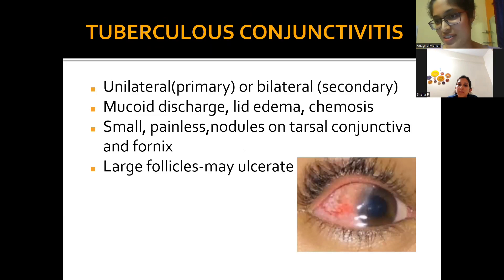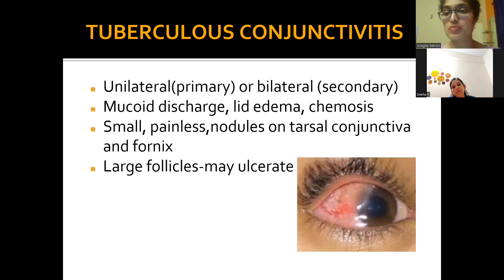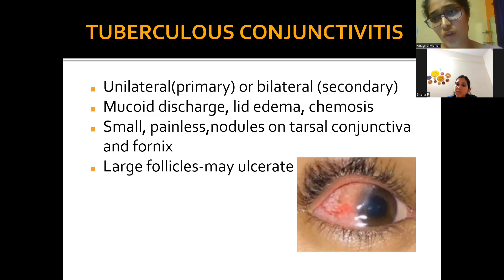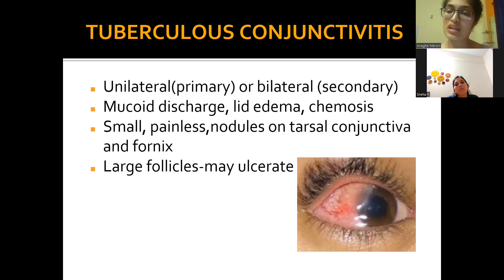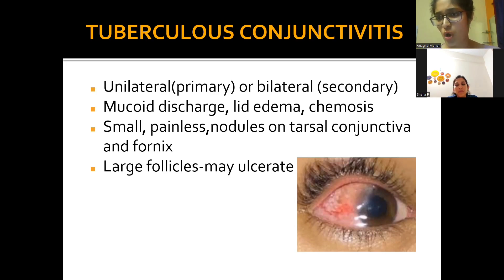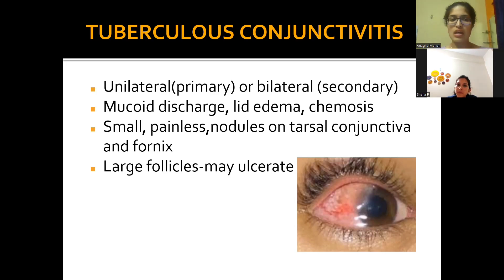Regarding tuberculous conjunctivitis: even after topical antibiotics fail and systemic treatment and steroids are tried without resolution, tuberculosis should be considered as the underlying cause. If the patient also has classic TB symptoms — two weeks of fever, night sweats, and cough — alongside conjunctivitis, this gives a stronger positive indication that tuberculosis may be underlying the conjunctivitis.